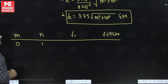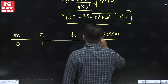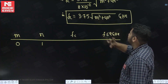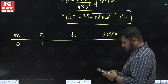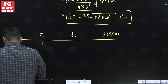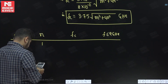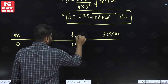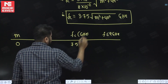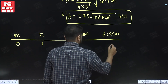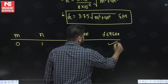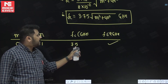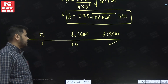For m=0, n=1: FC = 3.75 times root of 4 = 3.75 times 2 = 7.5 gigahertz. Since 7.5 GHz is less than 9 GHz, mode (0,1) is allowed and will pass.